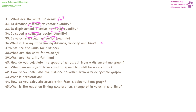Distance here is represented by s. Distance equals velocity times time. The units for distance are meters, the units for velocity are meters per second, and the units for time are seconds.